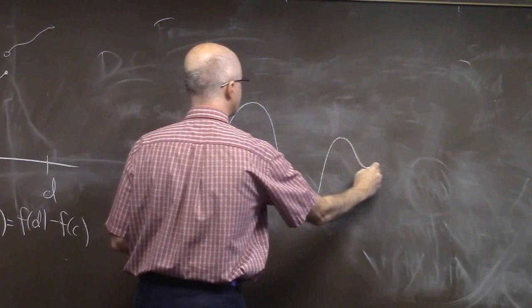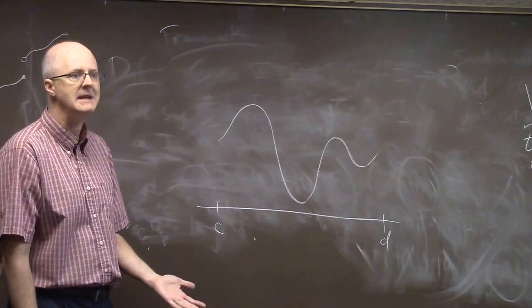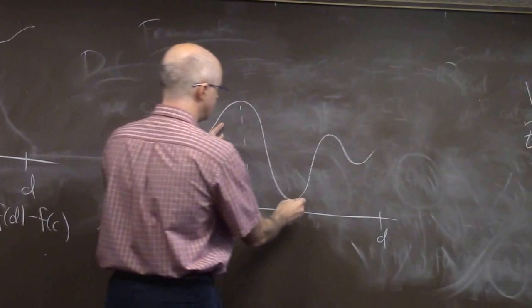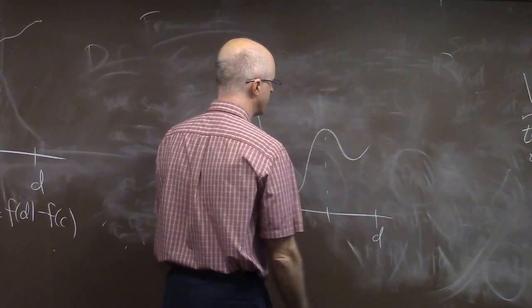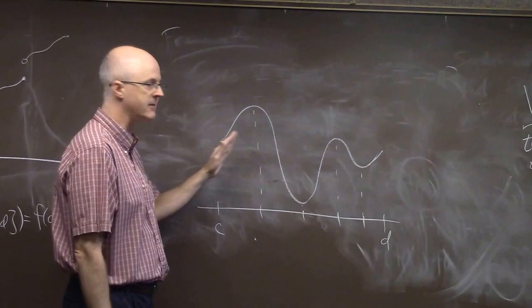Say you have a function whose graph looks like this. You can break it up into monotone pieces. So any function where you can break up the graph into pieces that are monotone. The first piece is monotone increasing. The second piece is monotone decreasing. The third piece is monotone increasing. The fourth piece is monotone decreasing. The last piece here is monotone increasing. It turns out the variation of this function over this entire interval is the sum of the variations of the functions over the pieces.